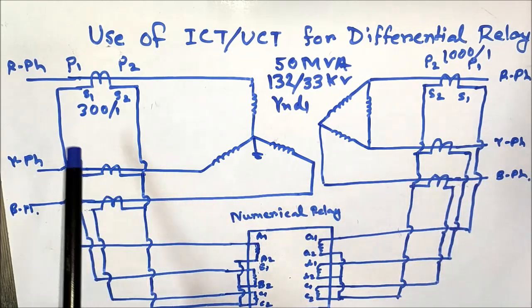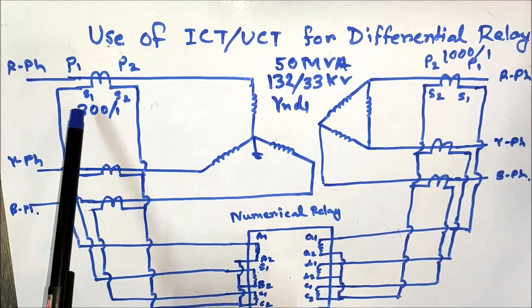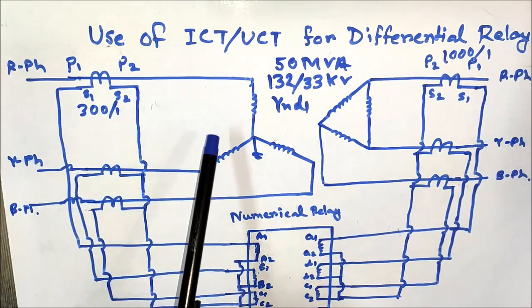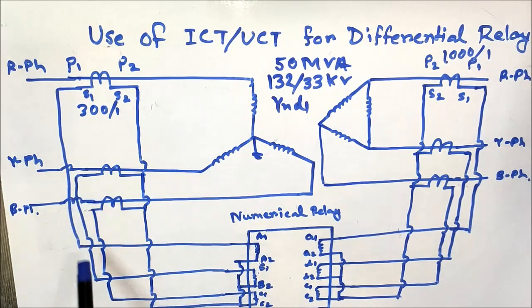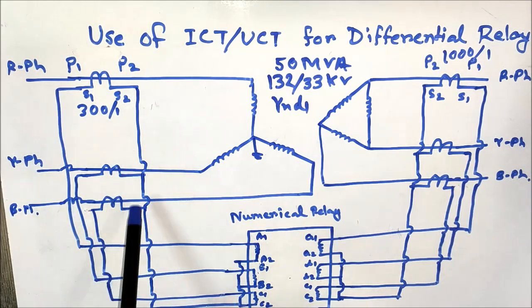CTs for red, yellow, and blue phase are connected in the same manner: P1 is connected to the 132 kV bus and P2 is connected to the transformer side. The S1 secondary terminals are taken to the numerical relay — A1 for red phase, B1 for yellow phase, and C1 for blue phase. A2, B2, and C2 terminals are shorted together to form the neutral and connected back to the S2 terminal of the CT group for the HV side.